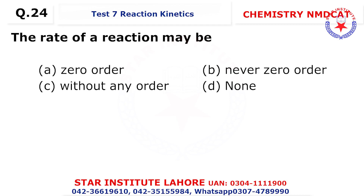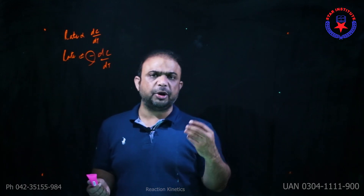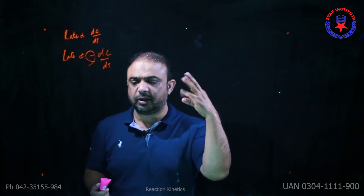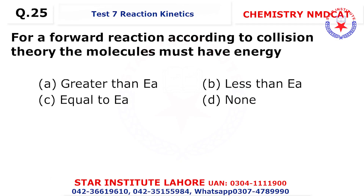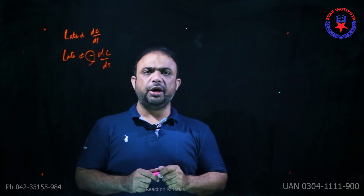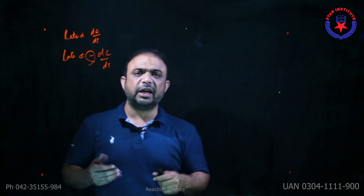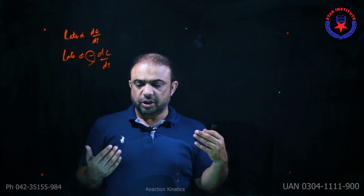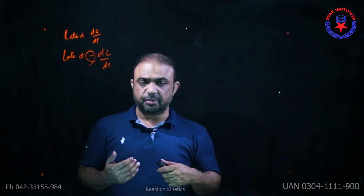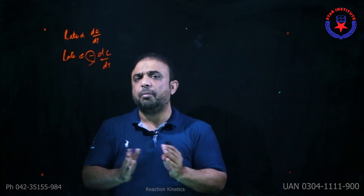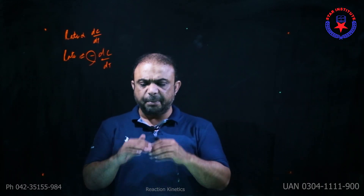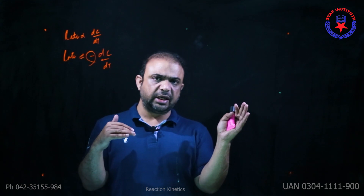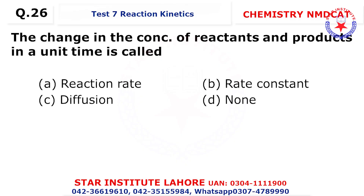Question 24: The rate of reaction may be zero order, first order, second order, or third order. Question 25: For a forward reaction, according to collision theory, only those reactants can proceed in the forward direction that have energy greater than the activation energy barrier — choice A. Molecules with equal energy have a 50% chance of forming products.